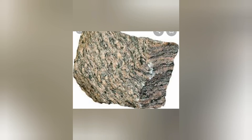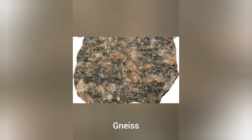The fourth metamorphic rock is gneiss. It is formed from granite, which is an example of igneous rock. It is coarse-grained and has irregular bands of different colors. It often glitters because it contains the shiny mineral mica. You can see its irregular bands and different textures in the image — this is why gneiss appears shiny.